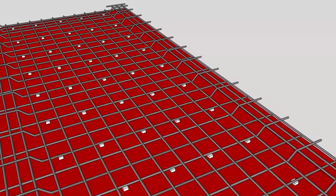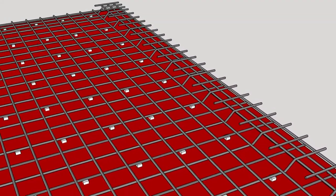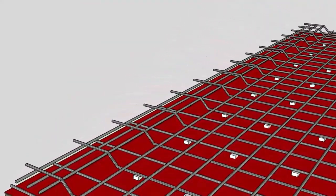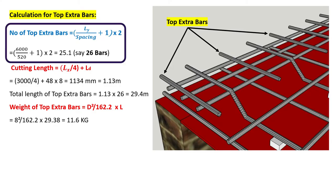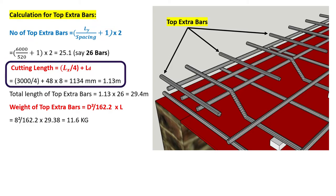Finally, the calculation for top extra bars, which are provided when the main bars are provided as alternative bent-up bars. The number of top extra bars is given by: Ly / spacing + 1, multiplied by 2. Ly is the longer span of 6000 mm and spacing is twice the main bar spacing, i.e., 520 mm, giving 25.1, say 26 bars. The cutting length equals Lx/4 plus development length: Lx is 3000 mm and development length is 40D where D is 8 mm, giving a cutting length of 1.13 meters.